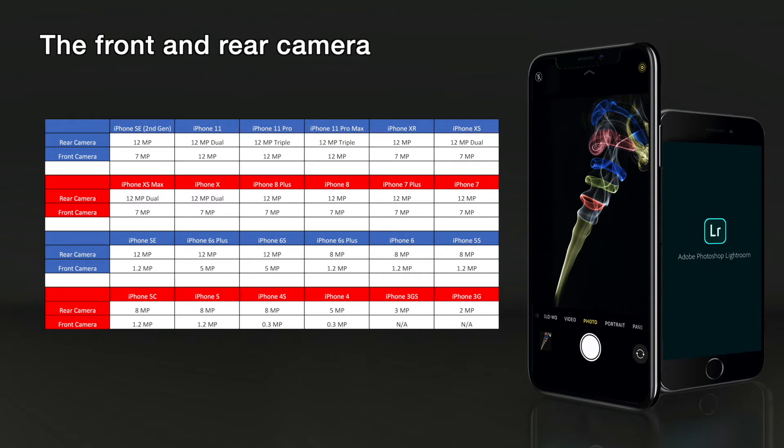The big difference is with the iPhone 7 through to the iPhone XR. The rear cameras are still 12 megapixels but the front cameras are only 7 megapixels.